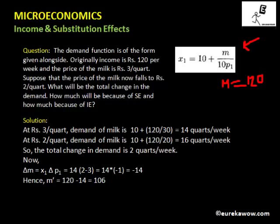What will be the total change in demand? First, let us find the demand when income is Rs. 120 and price of milk is Rs. 3. Substituting M equals 120 and P1 equals 3 in the equation, we get X1 equals 14. When the price is Rs. 2, substituting M equals 120 and P1 equals 2, we find X1 equals 16. So the total change in demand is 2 (which is 16 minus 14). Now let us decompose it into substitution effect and income effect.